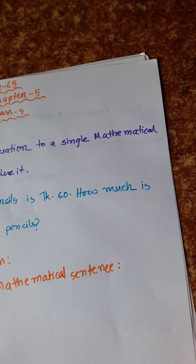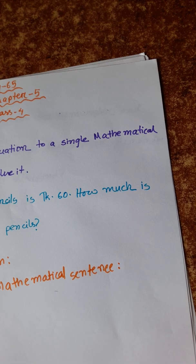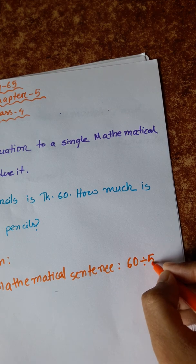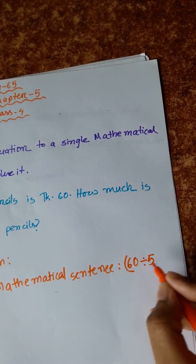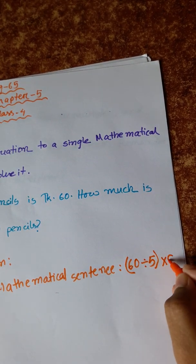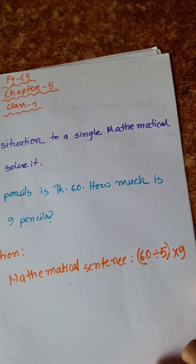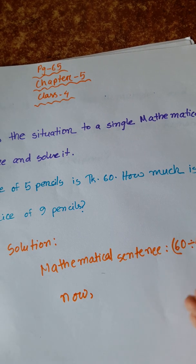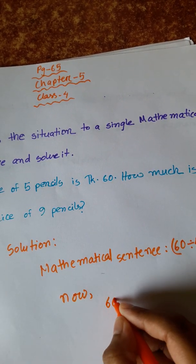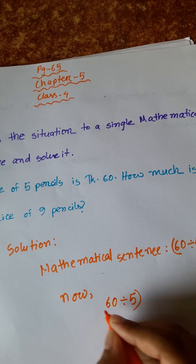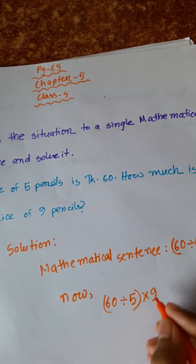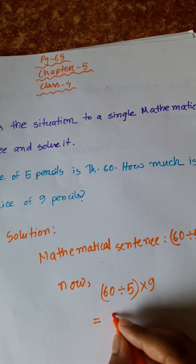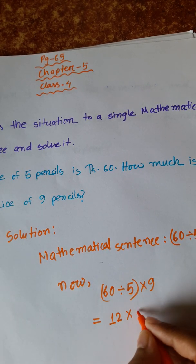The price of 1 pencil is Taka 60 divided by 5. So the mathematical sentence is: 60 divided by 5, into 9. That gives us 12 into 9.